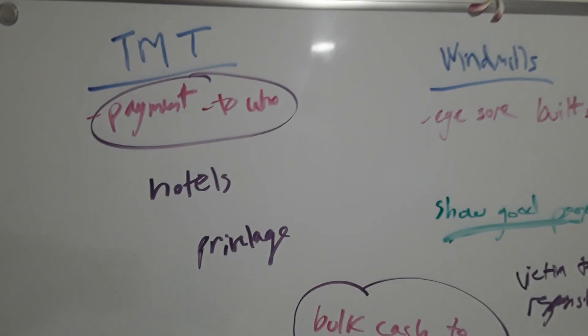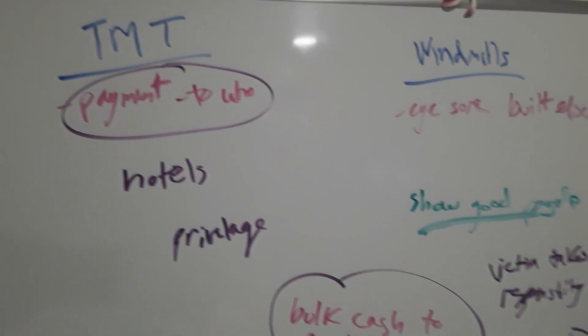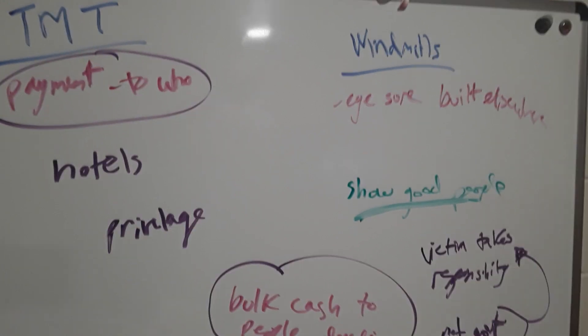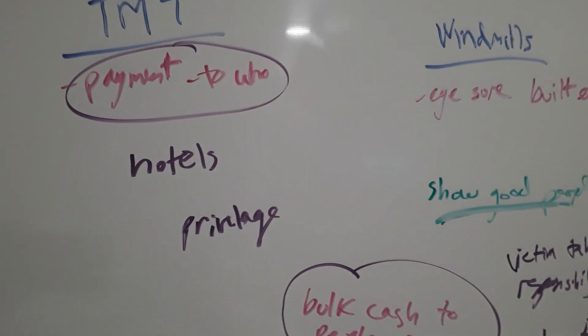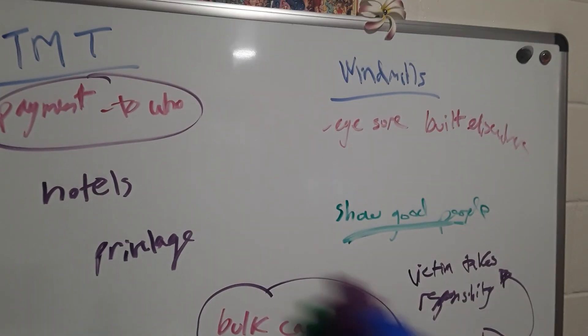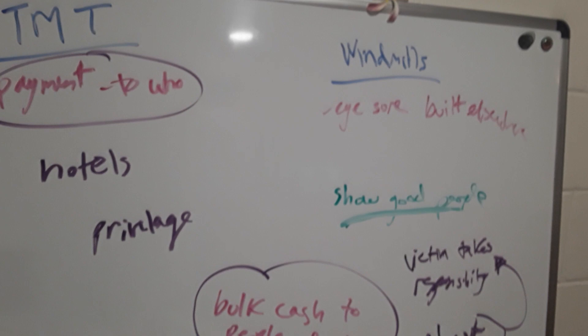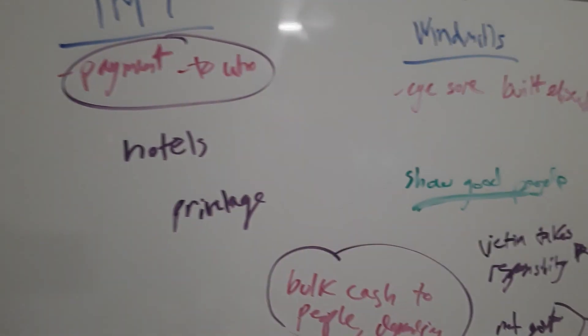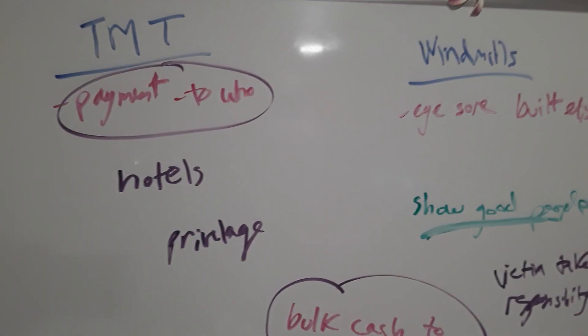All right, so the dynamics occurring on matters of the TMT and the windmills. Major concerns are it's cultural versus science. It might be an eyesore. Where else could it be built? Where else could the telescope be built if the people don't want it there? Why don't they want it there?